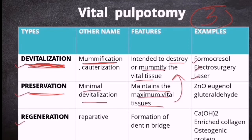In devitalization, we were destroying the vital tissue. But here we are preserving, we are keeping the vital tissue as far as we could. And the examples are zinc oxide, eugenol, glutaraldehyde, etc.